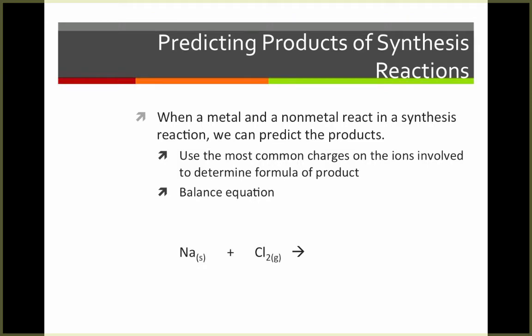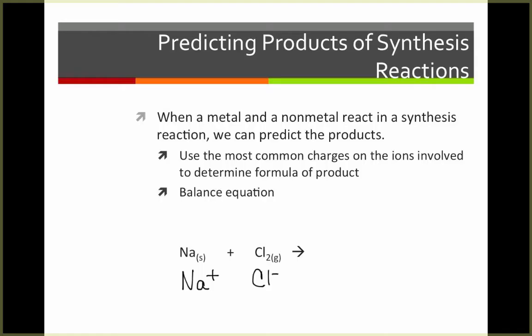For example, when solid sodium metal reacts with chlorine gas, we get sodium chloride. We have to first determine the formula for sodium chloride. You should know that sodium's most common charge is positive one, and chlorine's most common charge is negative one. This gives us a product of NaCl, which as I'm sure you know is a solid at room temperature due to its very high melting point.